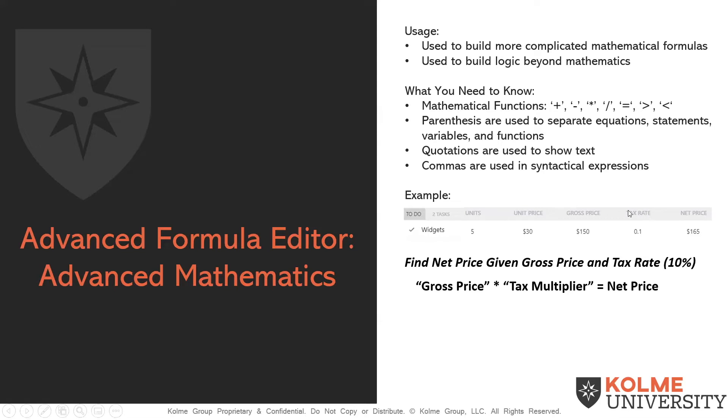Our second problem is, as you can see here, if we were to multiply gross price by the tax rate, all we would get is the total tax. What we actually need to find is a tax multiplier, so we can multiply gross price by the tax multiplier to get the net price. This requires two different formulas.